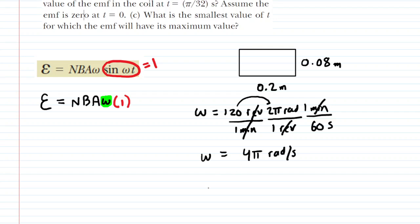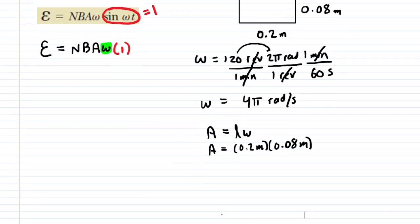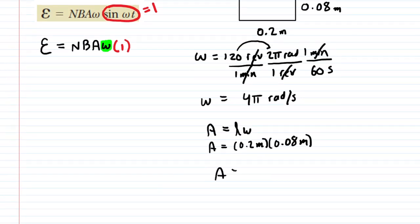We now also need to discuss the cross-sectional area of this rectangular loop. We've sketched it over here. We know that the area equals the length times the width. The question said that the length was 20 centimeters, so divide that by 100 to get 0.2 meters, and the width was 8 centimeters, divide that by 100 to get 0.08 meters. Multiply that out and we can see that the area is 0.016 meters squared.